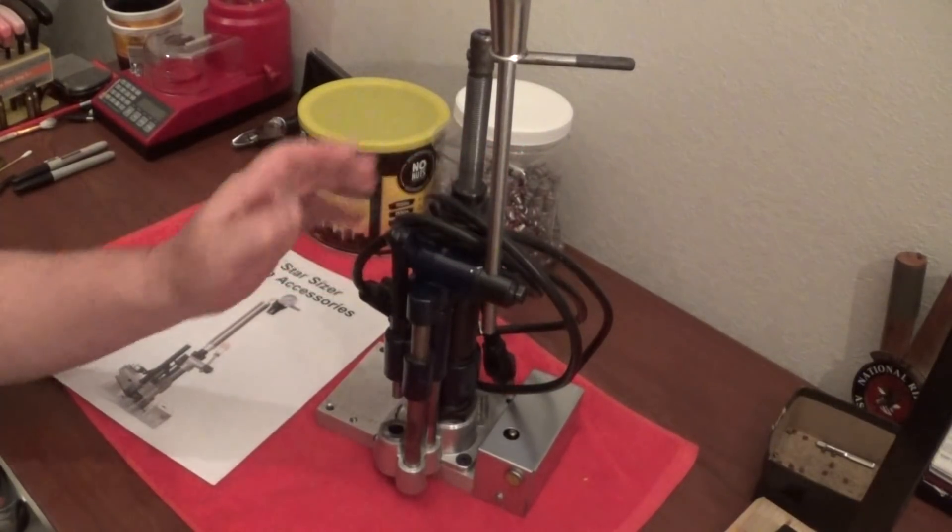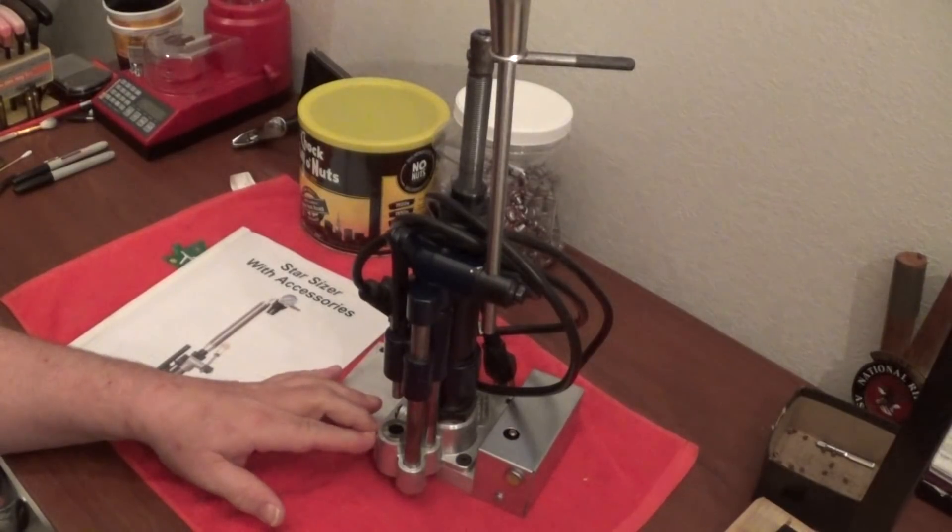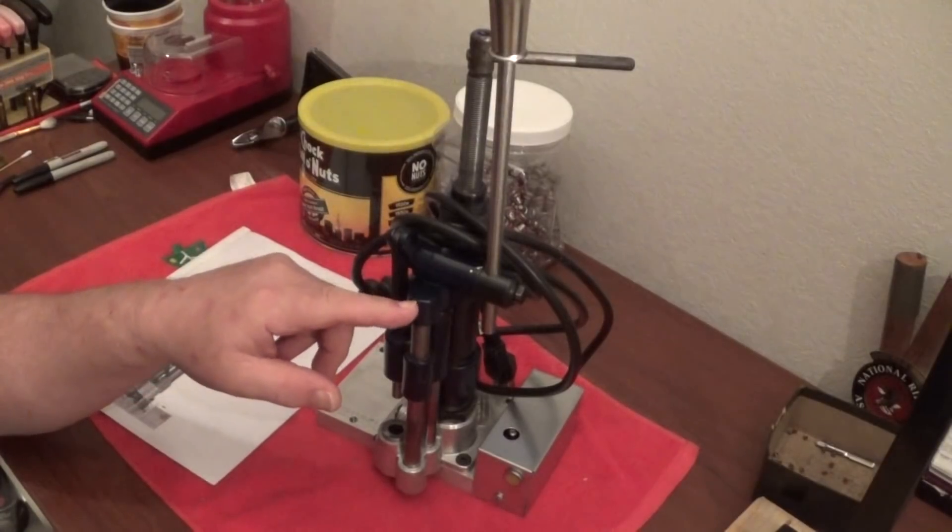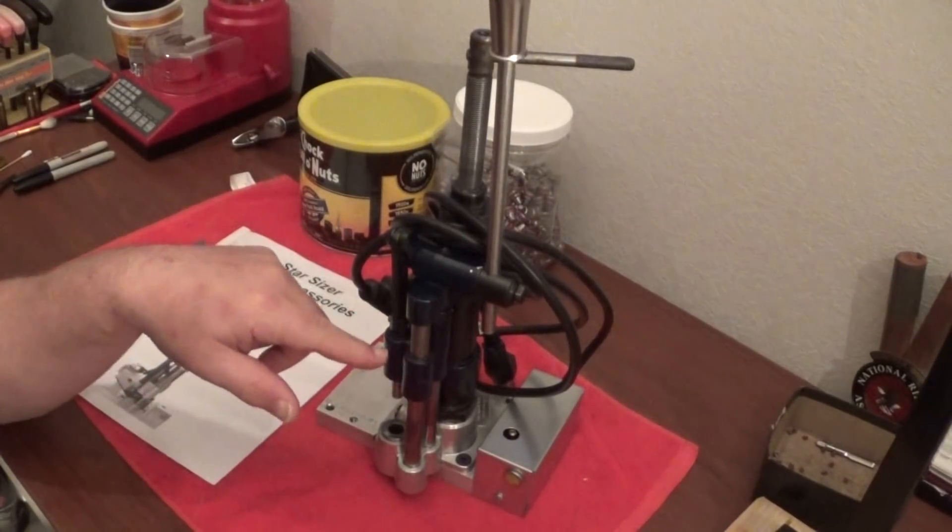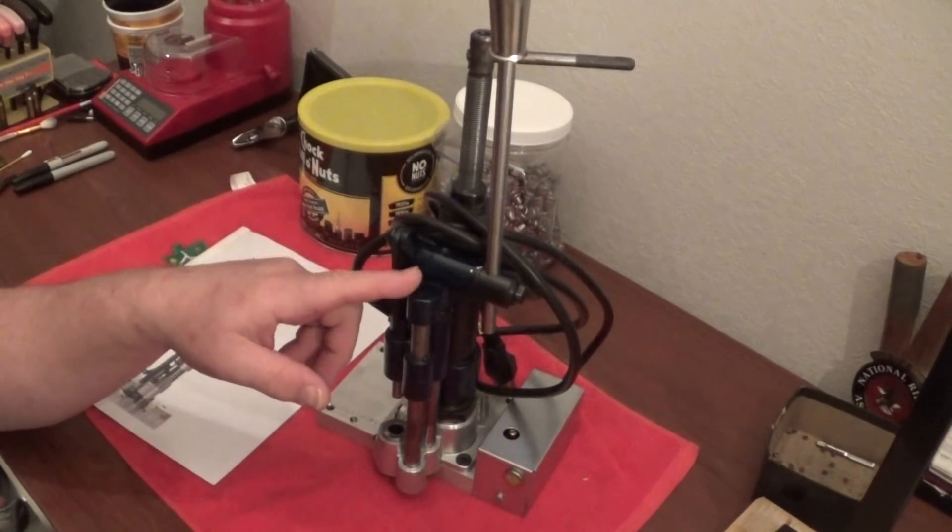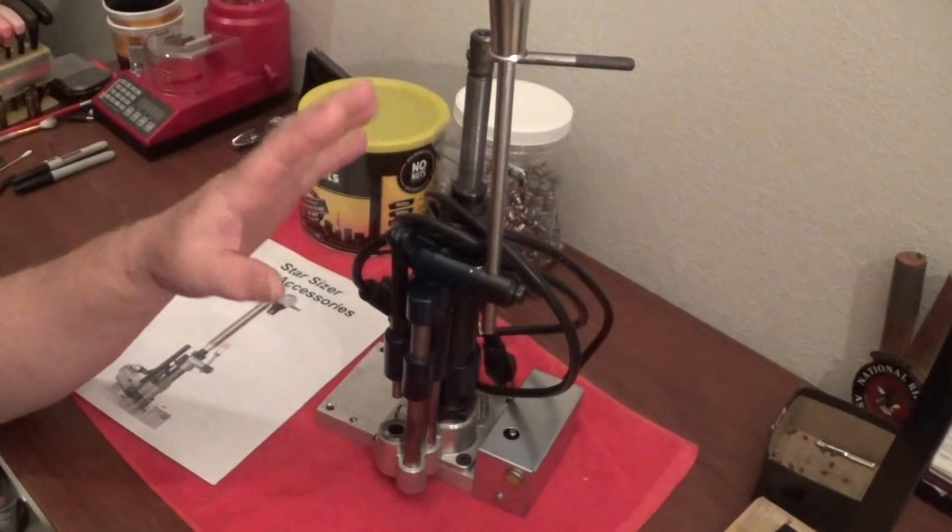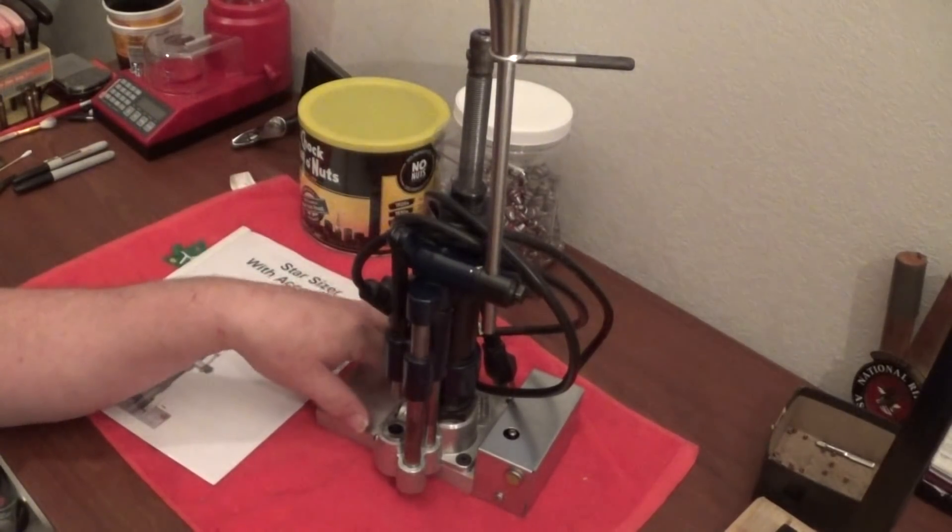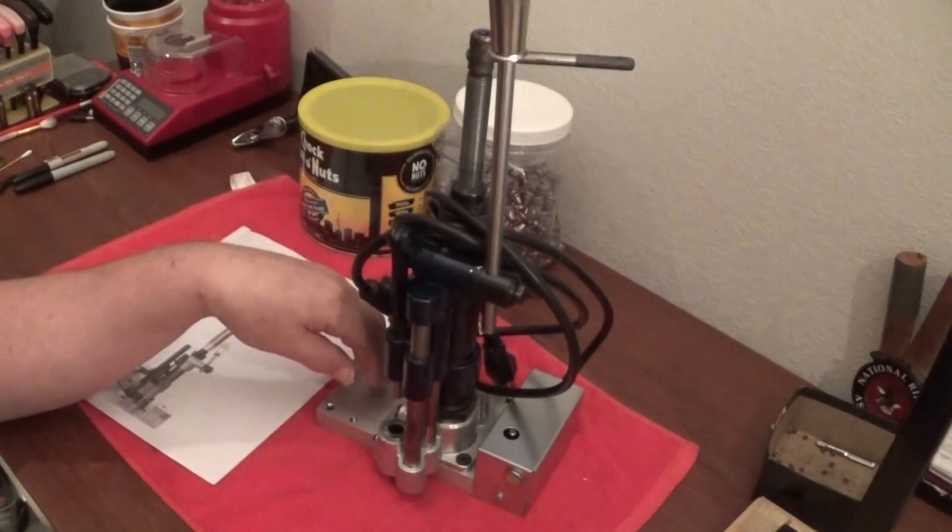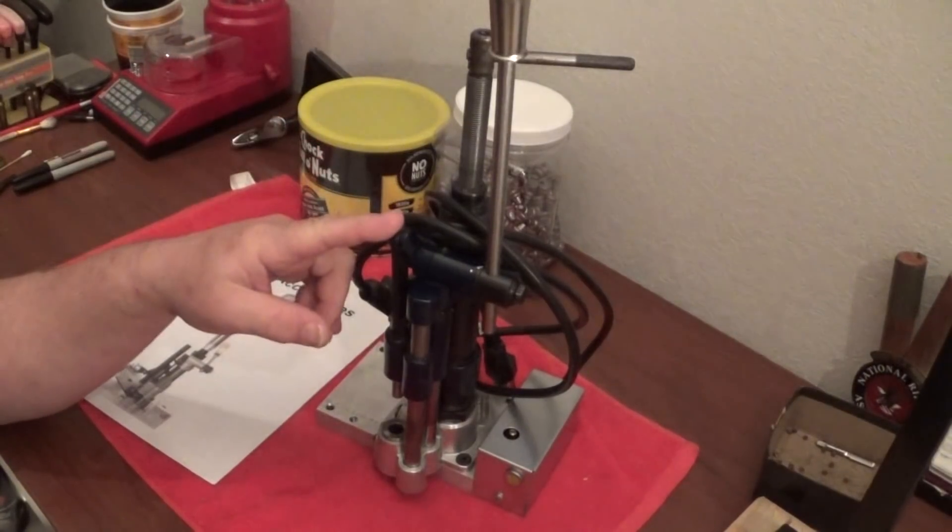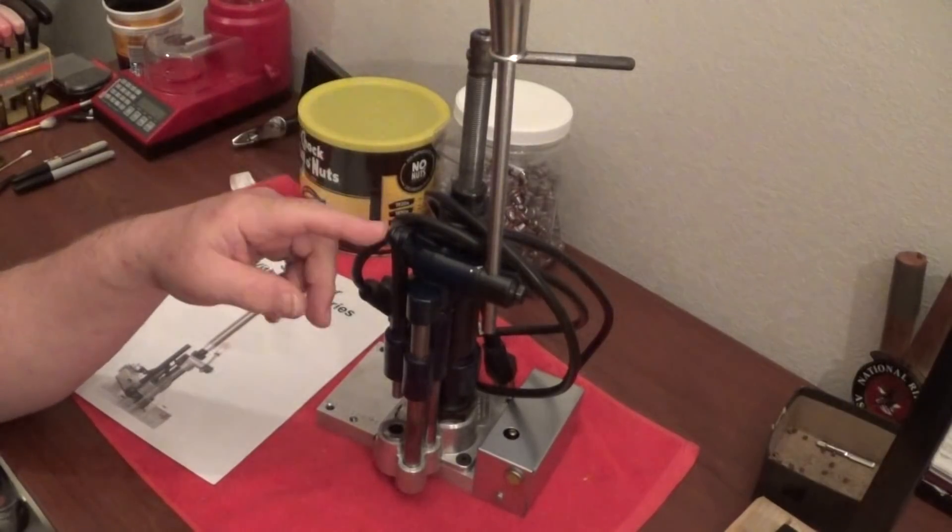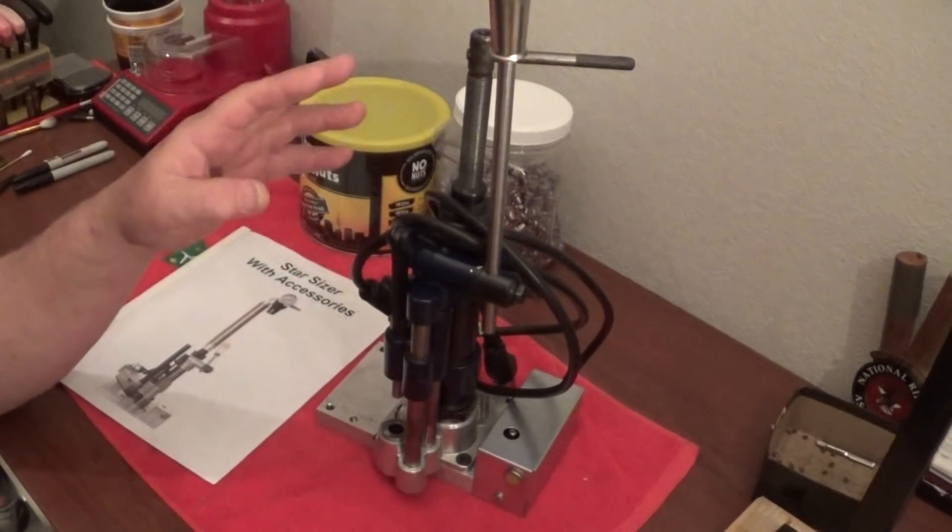This one here was manufactured by Star. It was made probably back between 75 and 80, and the reason why I can tell that is because Star painted their units and Magma did away with painting them and just used an anodized finish. I got a pretty good deal on these. This one here came with the heating base unit which is about 130 bucks.